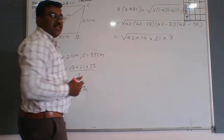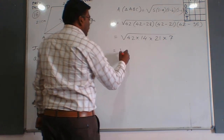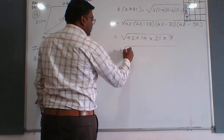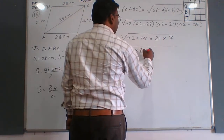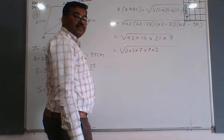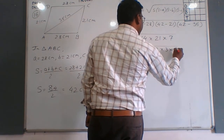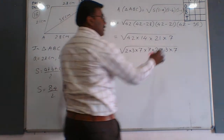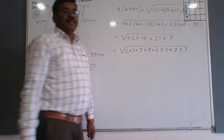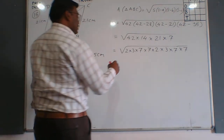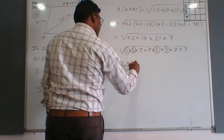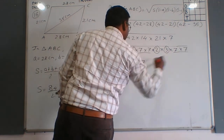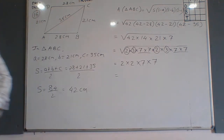We find the prime factors of each number to compute the square root. Breaking them down: 42 = 2 × 3 × 7, 14 = 2 × 7, 21 = 3 × 7, and 7 = 7. Making pairs for the square root, we get 2, 3, and two pairs of 7. Multiplying these gives us 294. So the area of triangle ABC is 294 cm square.